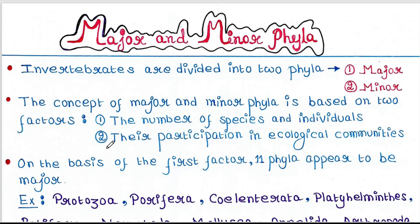Factor 2 is their participation in ecological communities. If the members of a phyla are found in several ecological communities, the phyla is said to be major. Whereas if the members of a phyla are found in few ecological communities, the phyla is said to be minor.